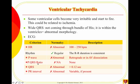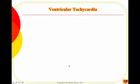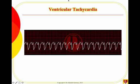Since VTAC is very fast, it's hard to recognize a P wave, and the P wave does not affect the ventricular dysrhythmia. There is no way to find a relationship between the P wave and the QRS, because the QRS complexes are not caused by conduction from the P wave. The PR interval is not available, and the QRS is always wide.